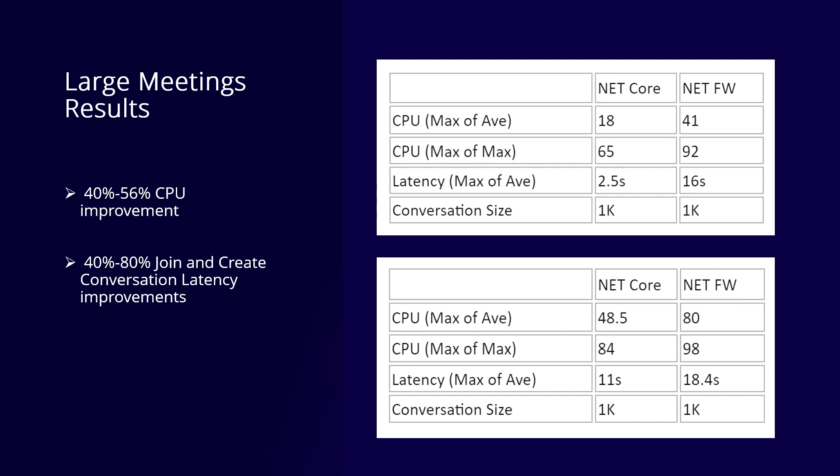From the performance comparison tables, for the best case scenario with 1,000 participants: CPU max of average was 18% on .NET Core compared to 41% on .NET Framework; max of max CPU was 65% on .NET Core compared to 92% on .NET Framework; and latency was 2.5 seconds on .NET Core compared to 16 seconds on .NET Framework. This means better reliability during large meetings and a better experience for customers during meeting joins and mid-meeting operations.